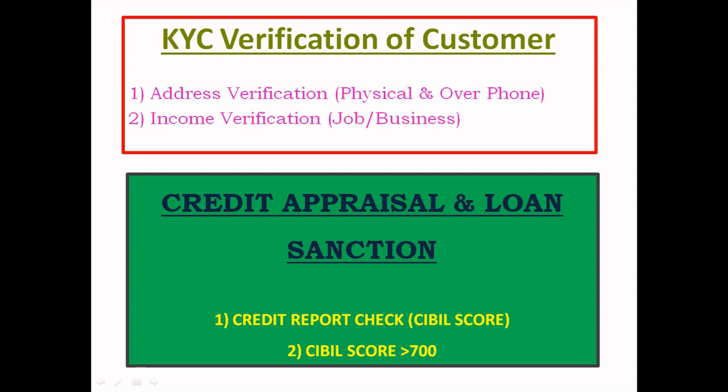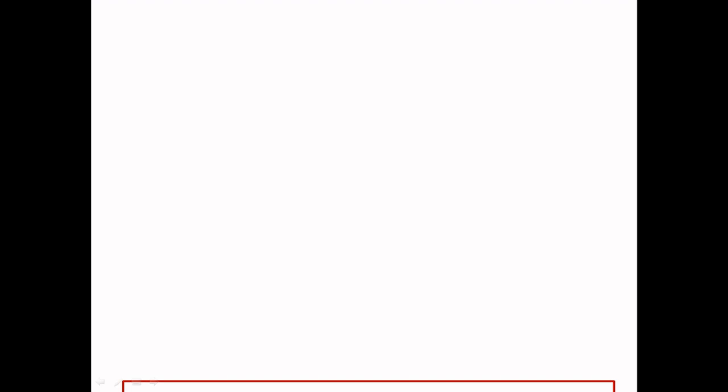Bankers will allow your loan to be sanctioned. Now, we have a loan offer letter to accept. When the loan is approved, we receive a loan offer letter. We sign and submit it — that means we have to accept it. This is the loan agreement stage.